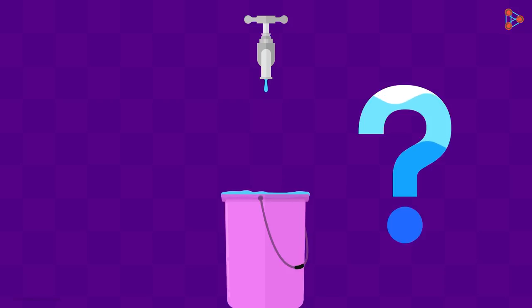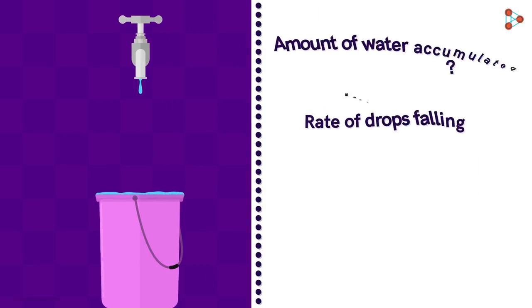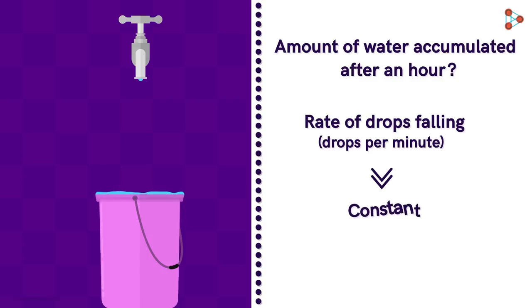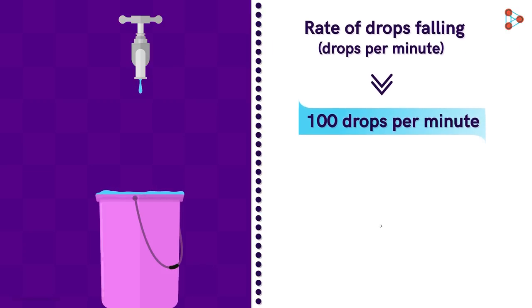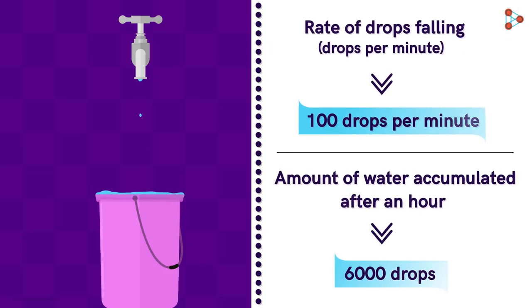Let's say we analyze this situation and get that the rate of drops falling per minute is constant. It is 100 drops per minute. Then we can easily find the answer. In an hour, 6000 drops will be accumulated.